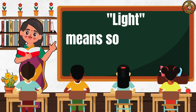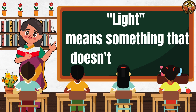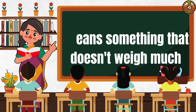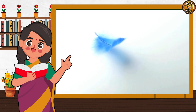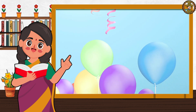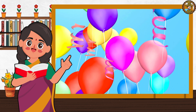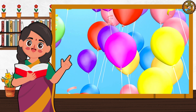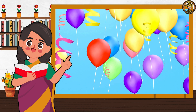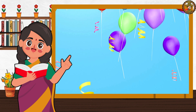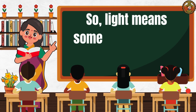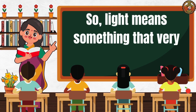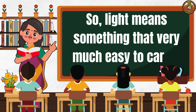Light means something that doesn't weigh much. For example, like this feather. Look how it floats gently in the air. A balloon is also light — it goes up and up because it's not heavy. So, light means something that is very easy to carry.